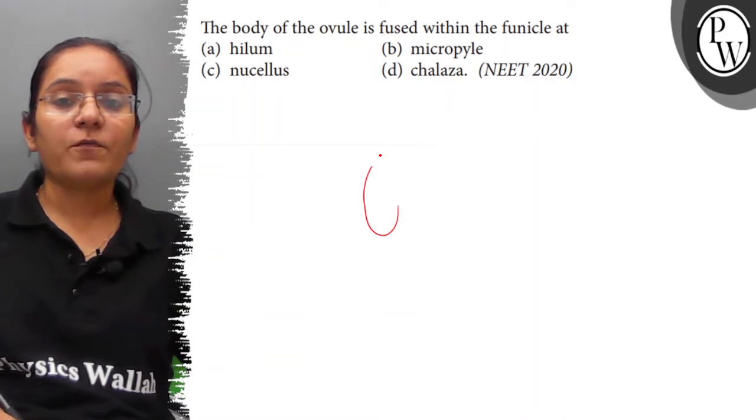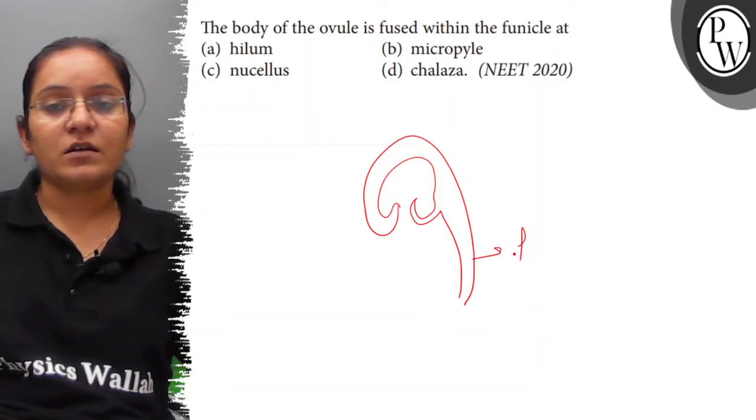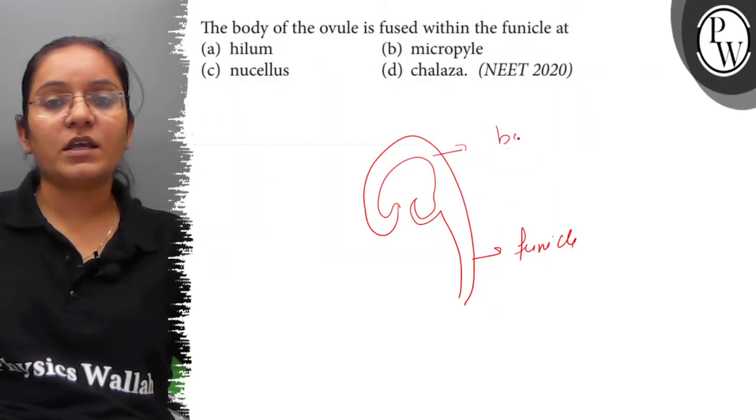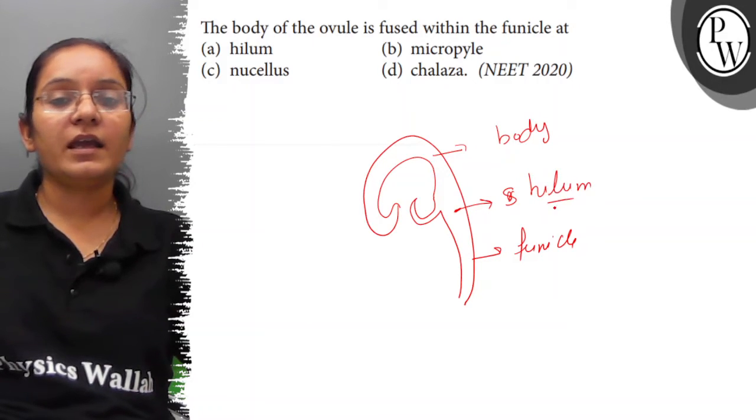So, the body of ovule is attached. This is a funicle - the portion which is attached to the placenta. And this is the main body of ovule attached to the portion within a funicle at a scar. There is a scar from where it is attached, called Hilum.